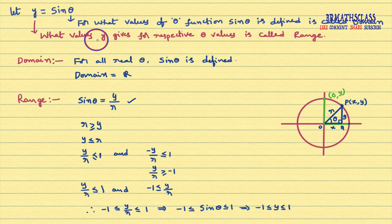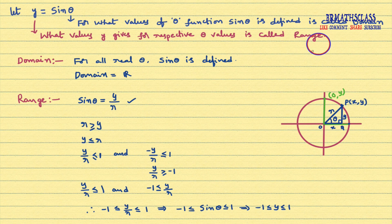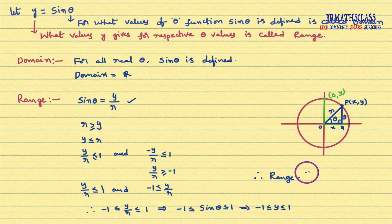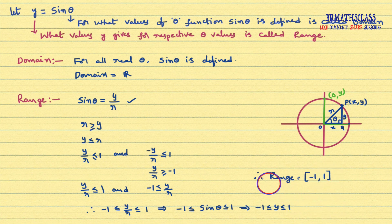So y values are in between minus 1 and plus 1, with the possibility of reaching minus 1 and plus 1. Therefore, the range of sine function is the closed interval minus 1 comma 1. Now we will see the graph of sine function.